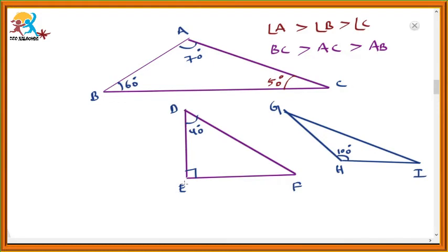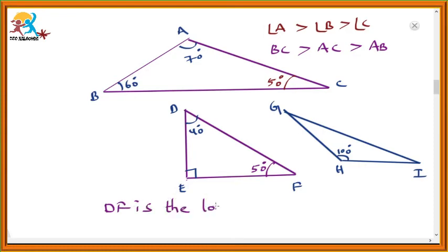Just observe this right triangle. In this, the right angle is at E and one angle is 40 degrees. In a right triangle, the sum of the two angles other than the right angle is 90 degrees. So the other angle will be 50 degrees. Here also, the three angles are different, so their opposite sides are also different. Among these three angles, the greater angle is the right angle, so its opposite side is DF, which is the longest side. Since it is a right triangle, the side opposite to the right angle is called the hypotenuse.